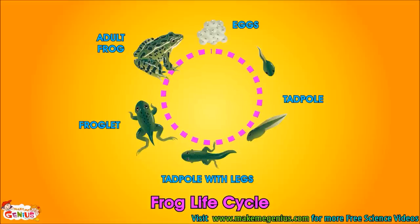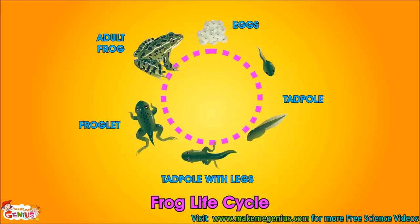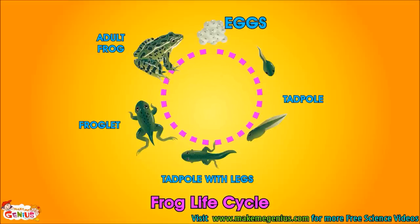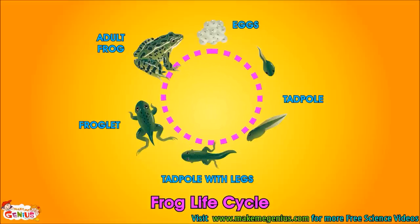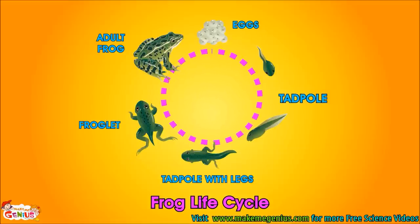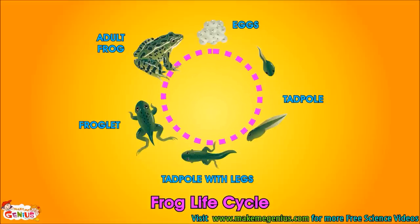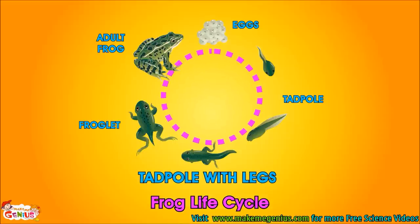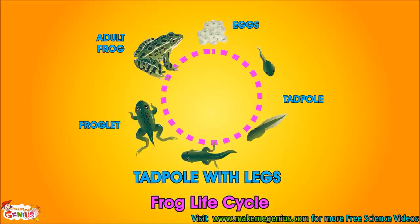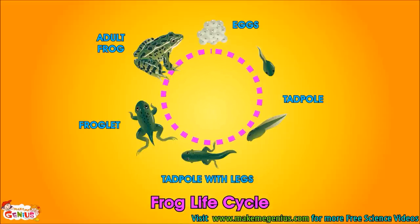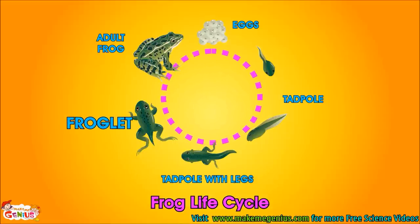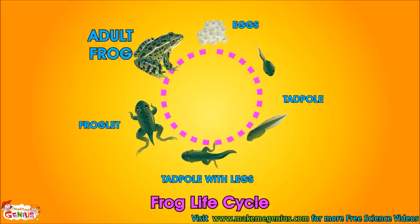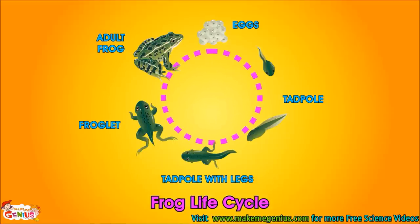Look at this complete life cycle of a frog. It starts from eggs, then tadpoles come out, who are like little fish. Slowly, a change happens, and tadpoles develop legs and lungs, and then they become a complete frog.